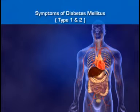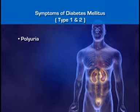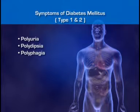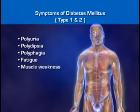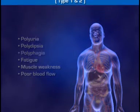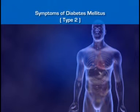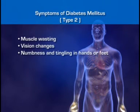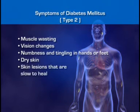Symptoms of type 1 and type 2 diabetes mellitus include the three P's: polyuria, polydipsia, and polyphagia, which is excessive hunger. Other symptoms include fatigue, muscle weakness, and poor blood flow, which leads to further fatigue. Type 2 diabetics may also present with other nonspecific symptoms including muscle wasting, vision changes such as blurring, numbness and tingling in hands or feet, dry skin, and skin lesions that are slow to heal.